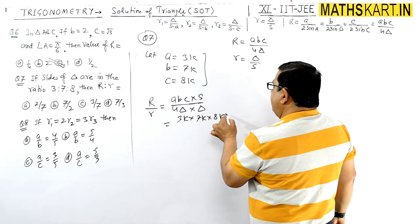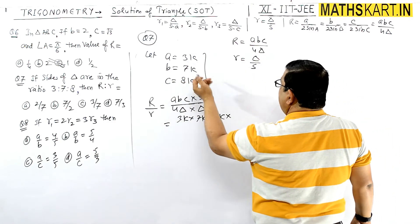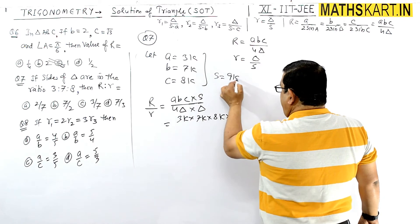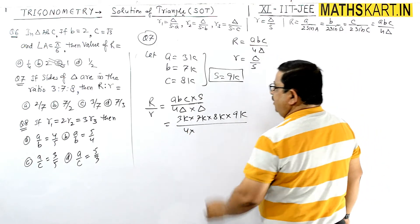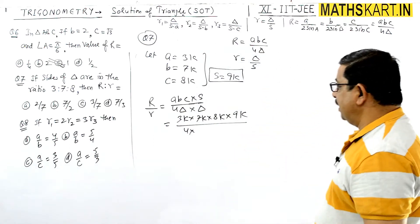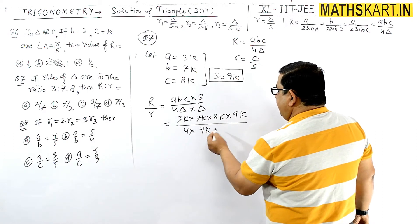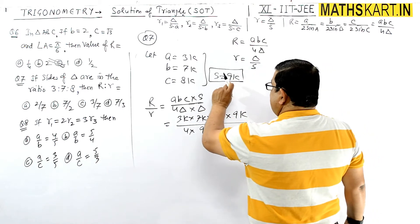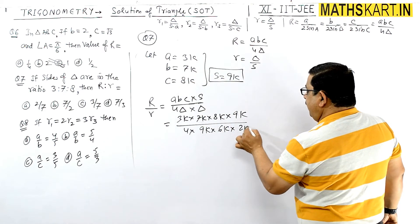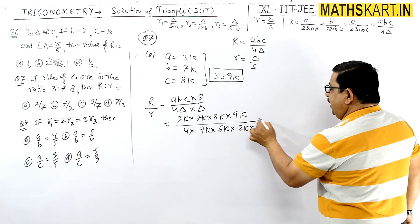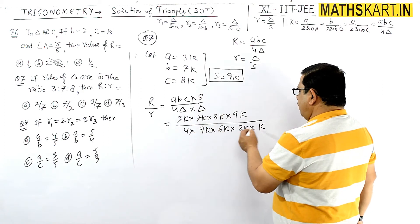Semi-perimeter s = (3k + 7k + 8k)/2 = 18k/2 = 9k. Then Δ² = s(s-a)(s-b)(s-c) = 9k × 6k × 2k × k. So s-a = 6k, s-b = 2k, s-c = k. Overall k powers: k⁴ appears in both numerator and denominator and cancels out.